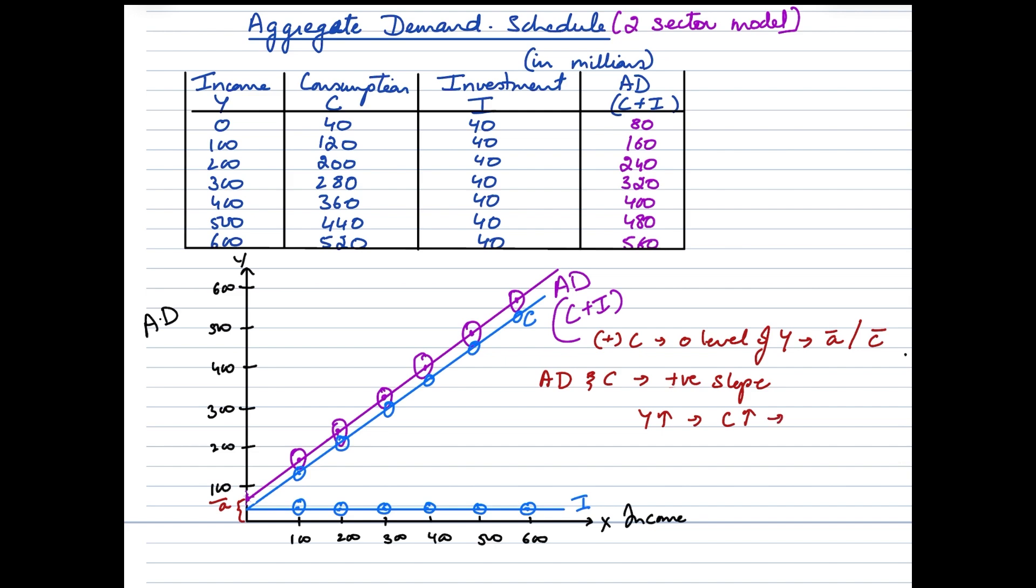Investment curve is a horizontal line parallel to X axis indicating that it is independent of income and hence it is constant at all levels of income. Now this investment level is also called as autonomous investment. So that's about it that you need to remember in a two sector model, depiction of aggregate demand.